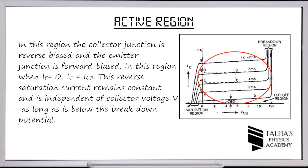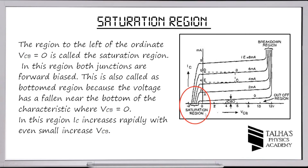The output characteristics have three regions. The active region is where the collector junction is reverse biased and the emitter junction is forward biased. When emitter current is zero, the collector current equals ICO — the reverse saturation current — which remains constant and is independent of collector voltage as long as it is below the breakdown potential.